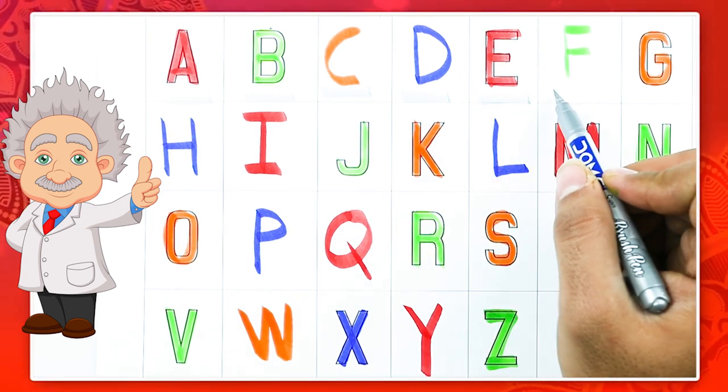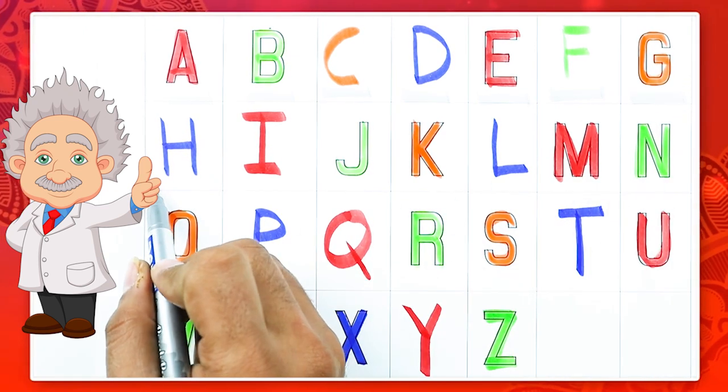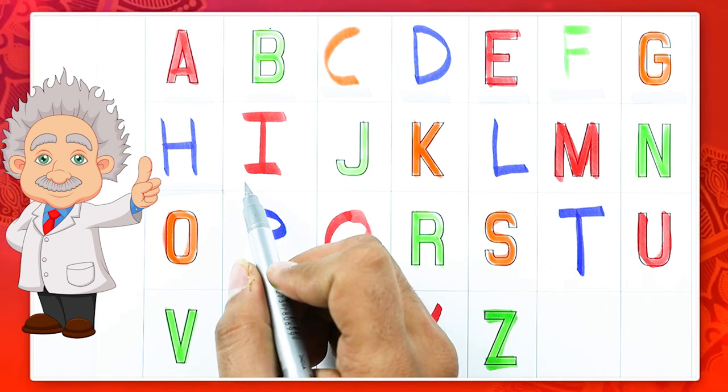E for elephant, F for fish, G for goat, H for hen.